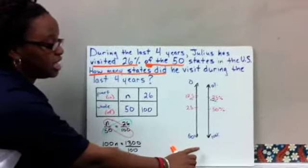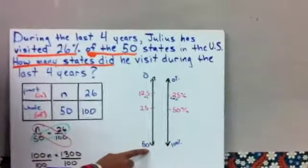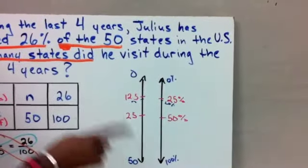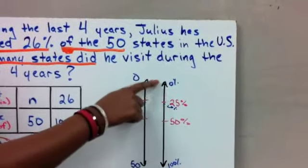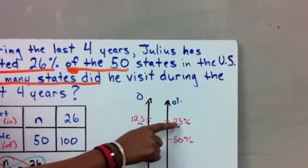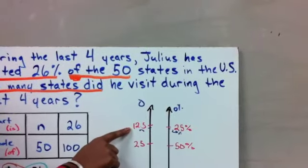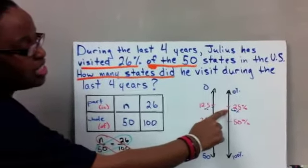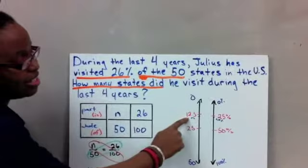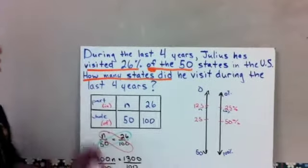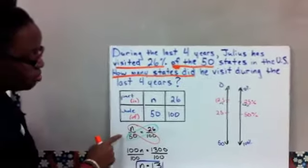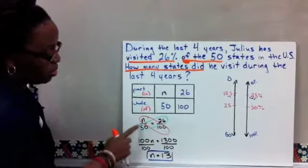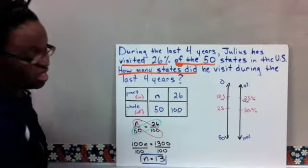We use our percent benchmarks to estimate our answer. 100% would be the 50 states. Halfway, 50% would be 25 states. We can benchmark it one more and go halfway between 50 and 0. And we know 25% would be 12 and a half states, which isn't really realistic. But we know that we're looking for 26%, which would be just a little bit more than 25. And so that our answer should be a little bit more than 12 and a half. When you go to work your percent proportion, cross multiply and divide 50 times 26 gives us 1300. And then we're going to divide by 100 to get that Julius has visited 13 states.